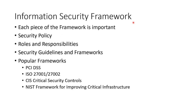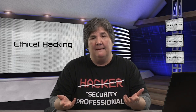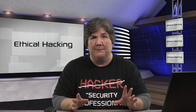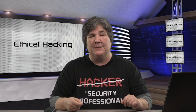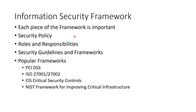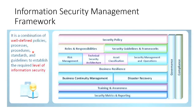An information security framework is simply a formal structure that you have adopted and possibly modified for your own use. Other people have gone this path before you — you don't have to reinvent the wheel. Take an existing framework and modify it to suit you. It'll start with a policy, identify roles and responsibilities, and include guidelines. Popular frameworks include PCI DSS, ISO 27000 series, CIS security controls, and NIST. All these well-defined policies, processes, procedures, standards, and guidelines add up to a required level of information security.